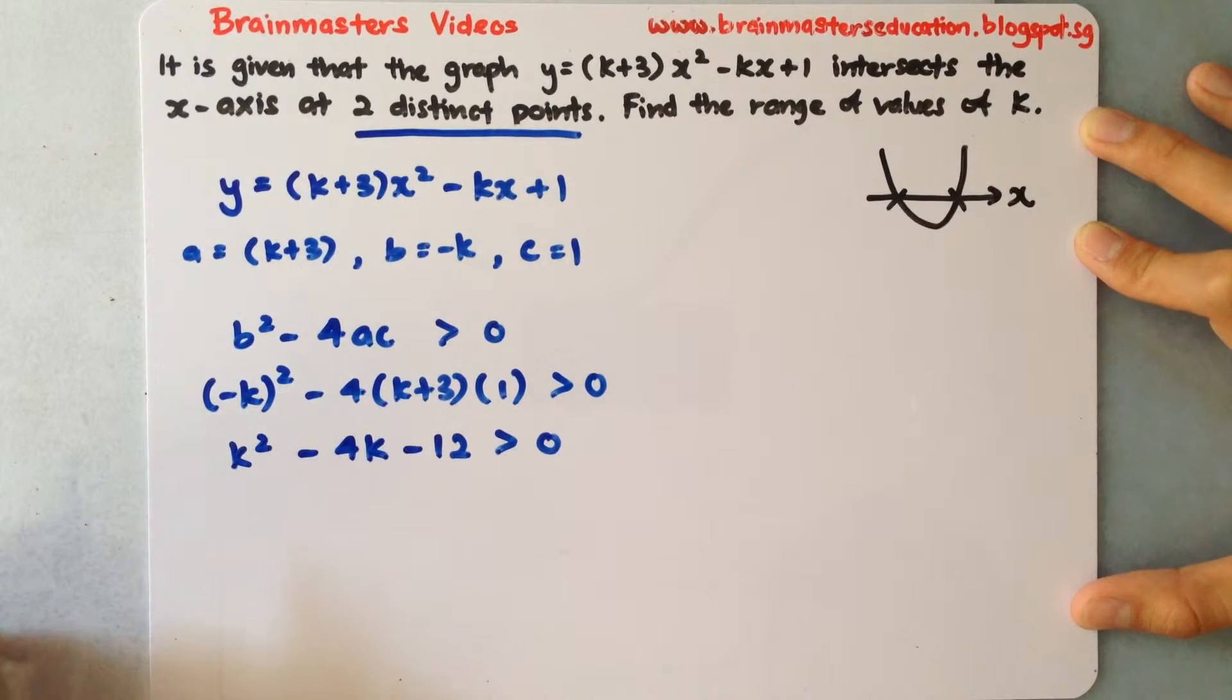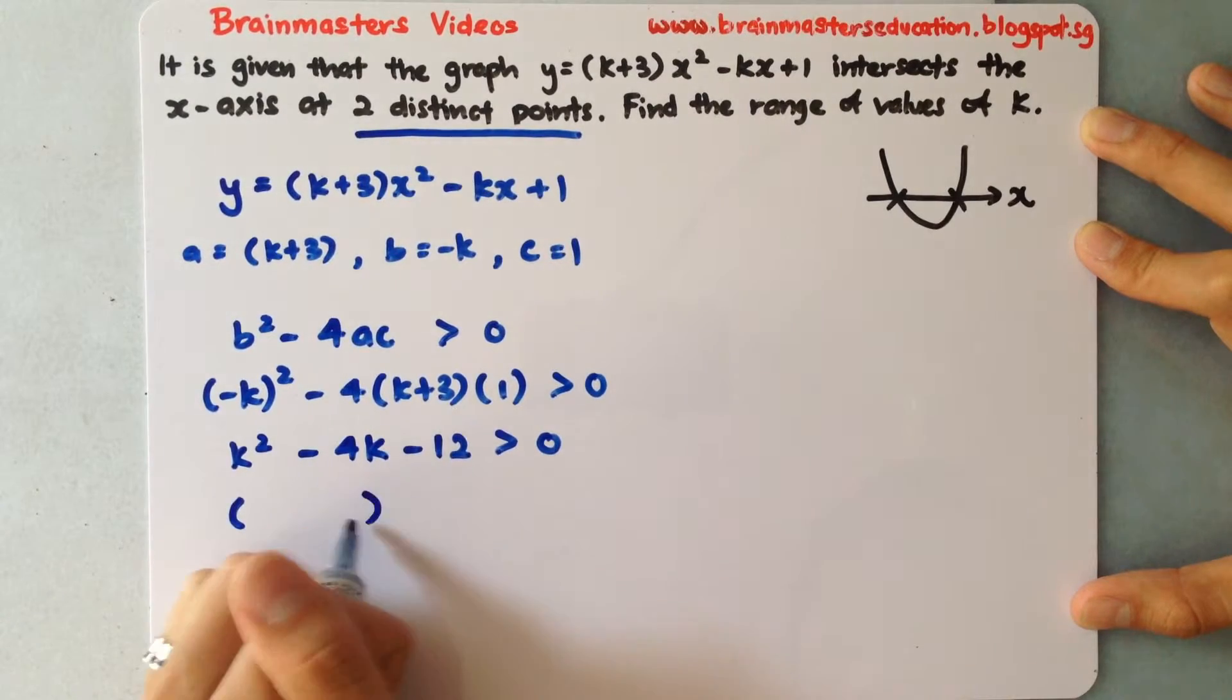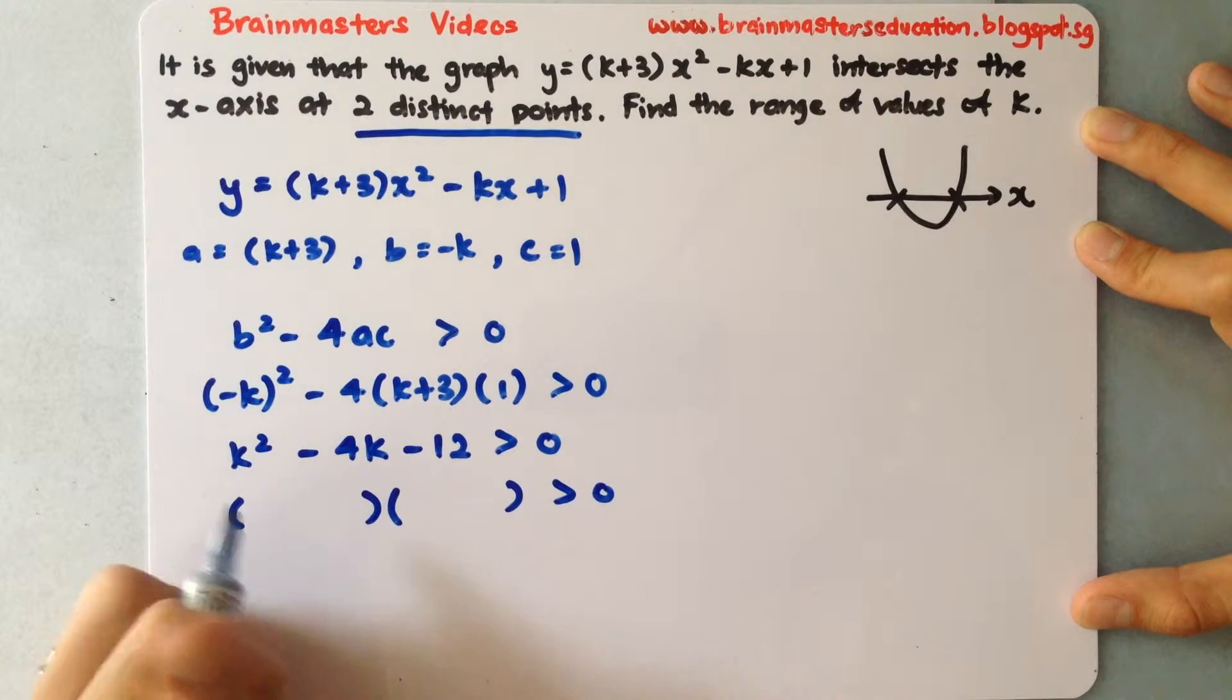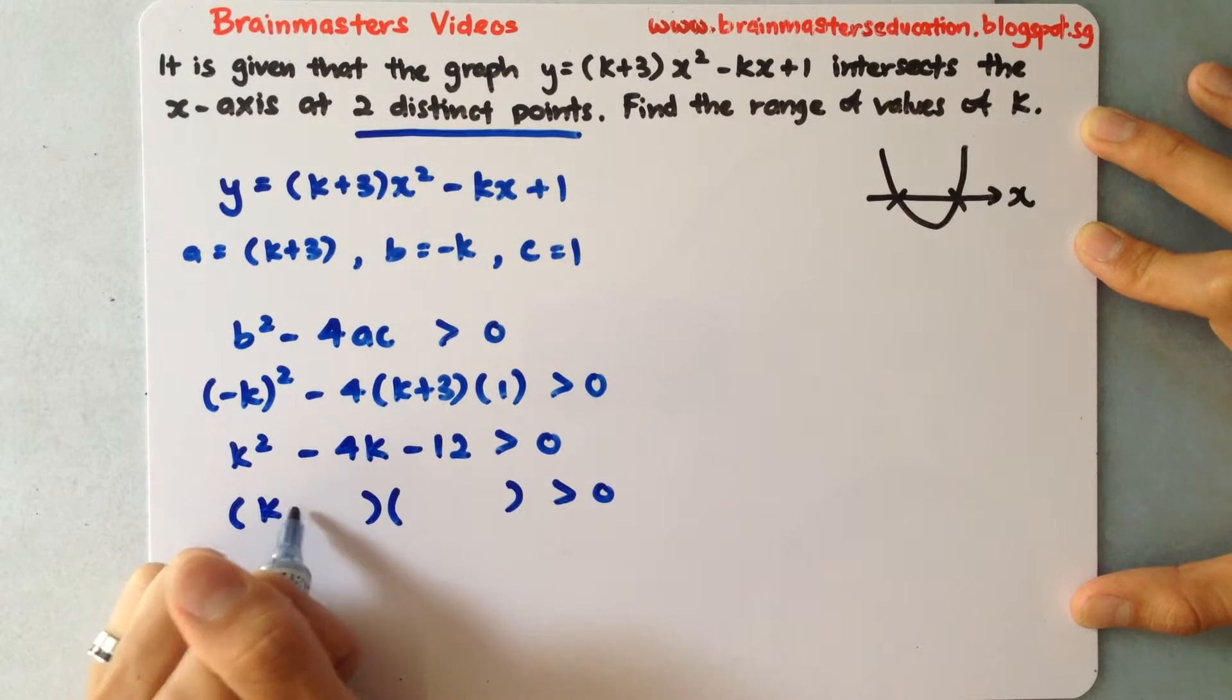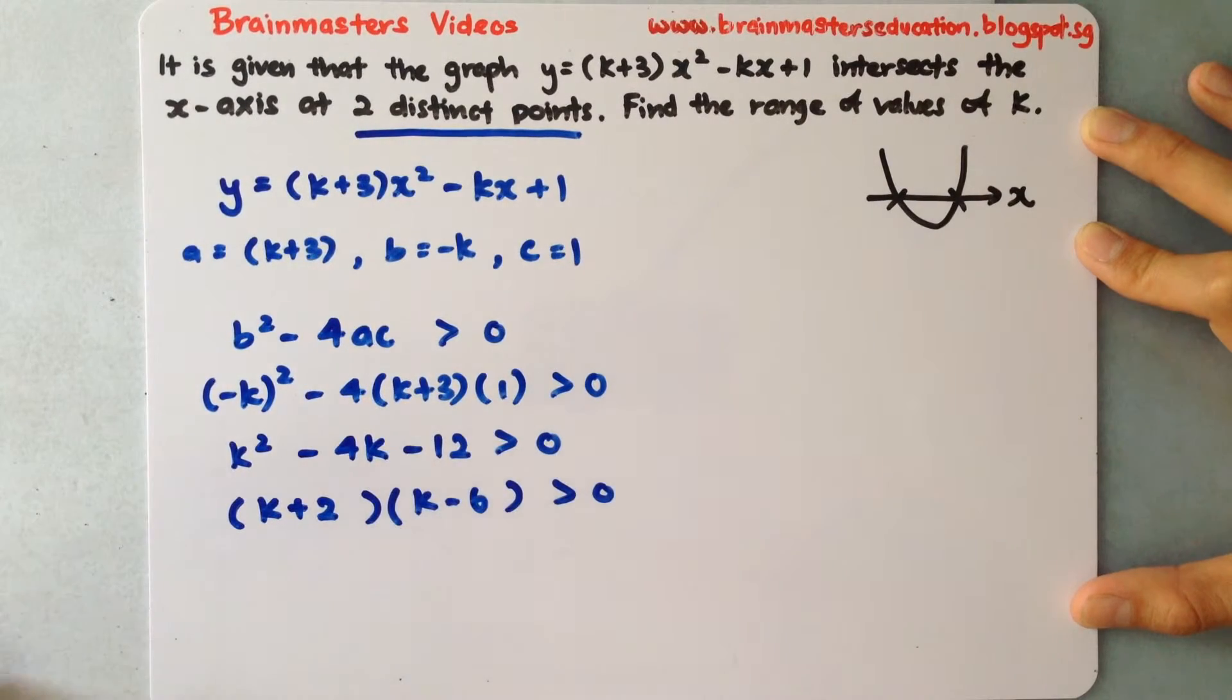Over here I will do my trial and error method. For trial and error method by now should be quite good at it. I will work out two brackets which will also be more than 0. So k plus 2, k minus 6.